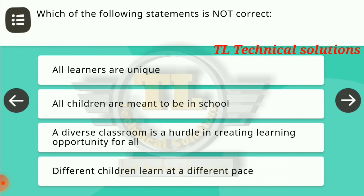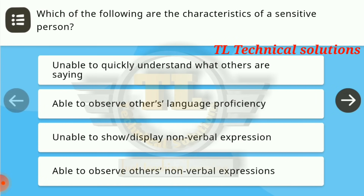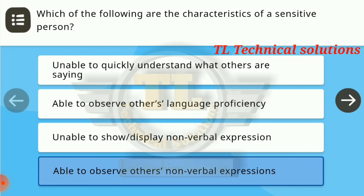Next question: which of the following statements is not correct? All of these are correct except the third one — a diverse classroom is a hurdle in creating learning opportunities for all. Next question: which of the following are the characteristics of a sensitive person? Sensitive persons are able to observe others' nonverbal expressions — the last option is the right answer.